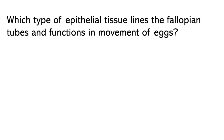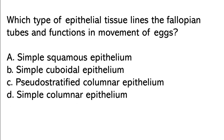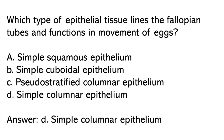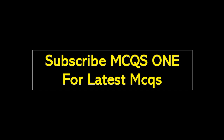Which type of epithelial tissue lines the fallopian tubes and functions in movement of eggs? Simple squamous epithelium, simple cuboidal epithelium, pseudostratified columnar epithelium, simple columnar epithelium. So the correct answer is option D: Simple columnar epithelium. Thanks for watching. Subscribe mcqs1 for latest MCQs.